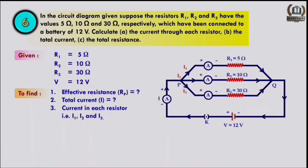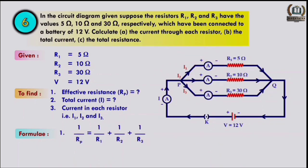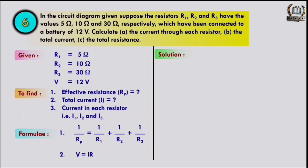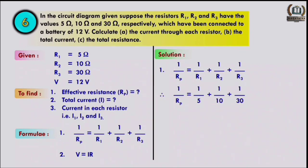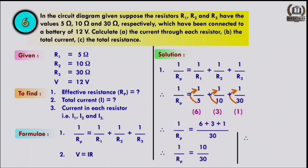We need to find effective resistance and currents I1, I2, and I3. Using 1/Rp = 1/R1 + 1/R2 + 1/R3, after calculating we get Rp = 30/10 = 3 ohm.